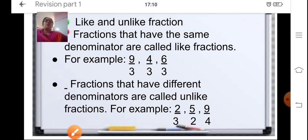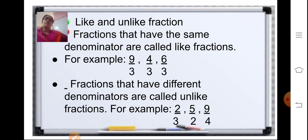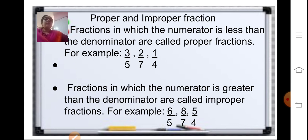Like fractions are those fractions that have the same denominator but different numerators. Unlike fractions are those fractions that have different denominators as well as different numerators — even if the numerators are same, the denominators will be different.